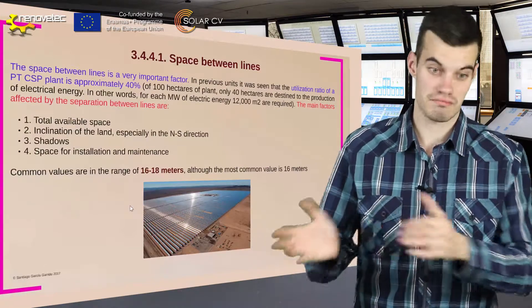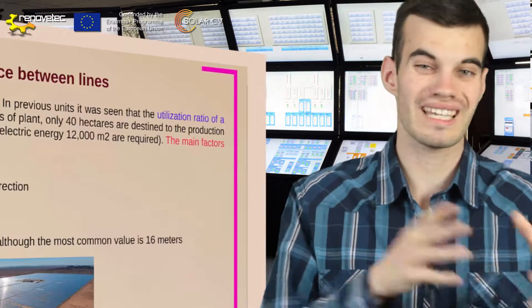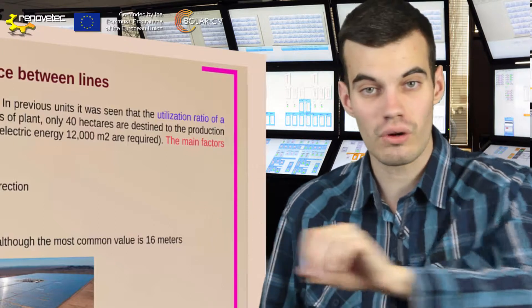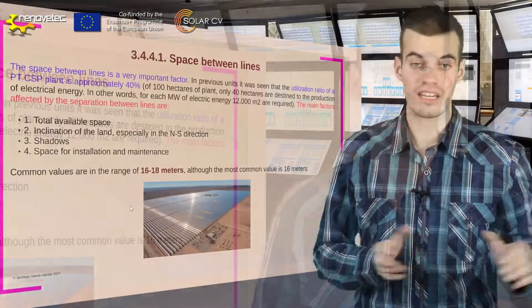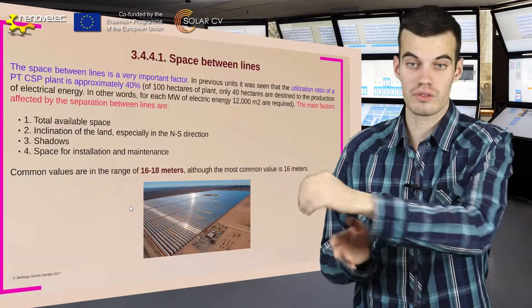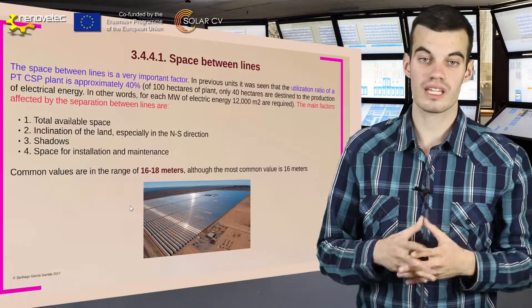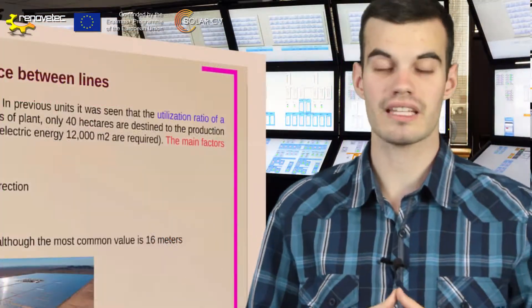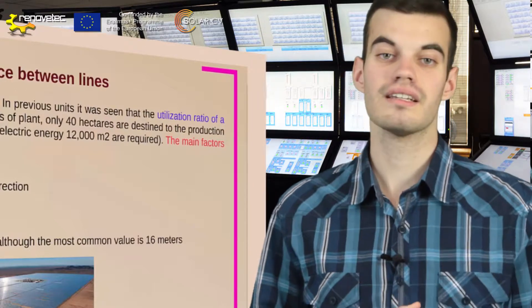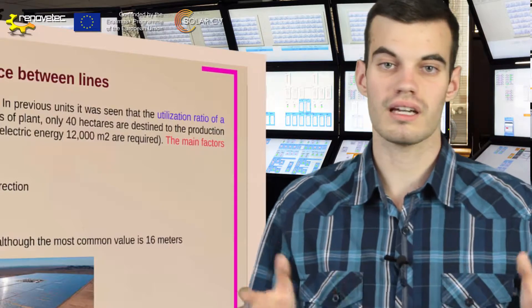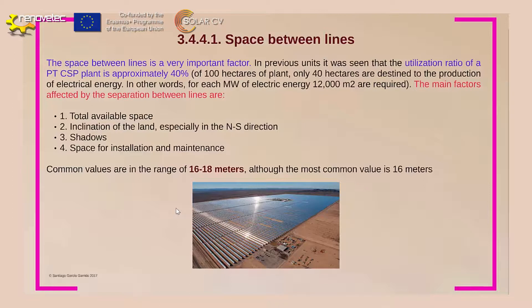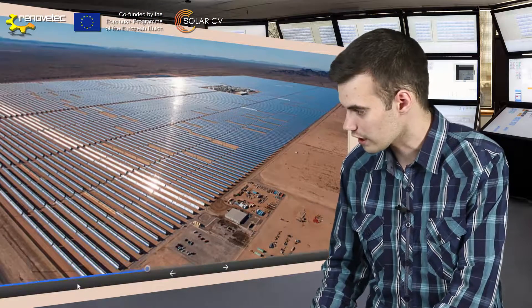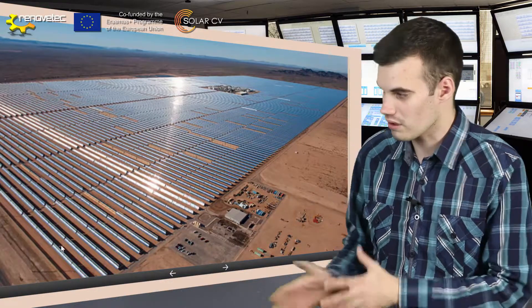The main factors affected by the space between lines are: the total available space, the inclination of the land especially in the north-south line, because the main orientation system is east-west so the loops go in the north-south line; the shadows, because we don't want any shadows on other parabolic troughs to improve performance; and finally the space for installation and maintenance, because each module must be cleaned of dust particles and bird droppings. Common values are in the range of 16 to 18 meters, although the most common value is 16 meters. Here we can see an example where the space between lines is more or less 16 meters.